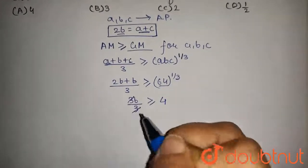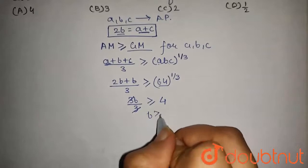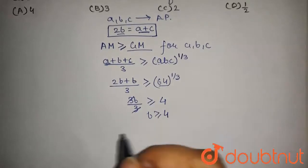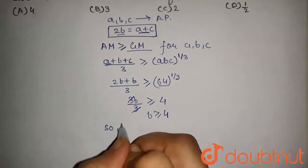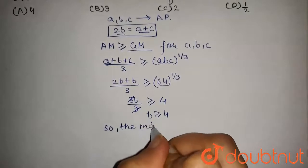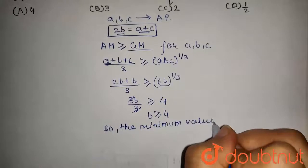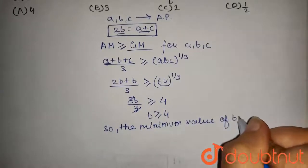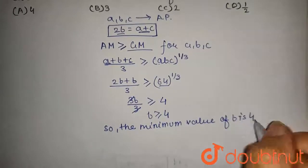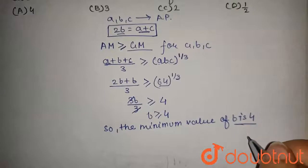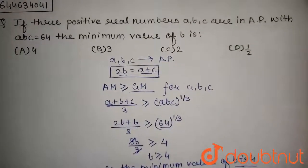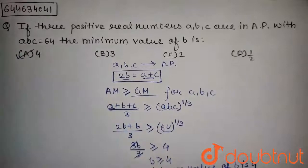So this 3 and this 3 will be cancelled out. So we get B is greater than or equal to 4. So the minimum value of B is 4. This is the answer of this question, option A is correct.